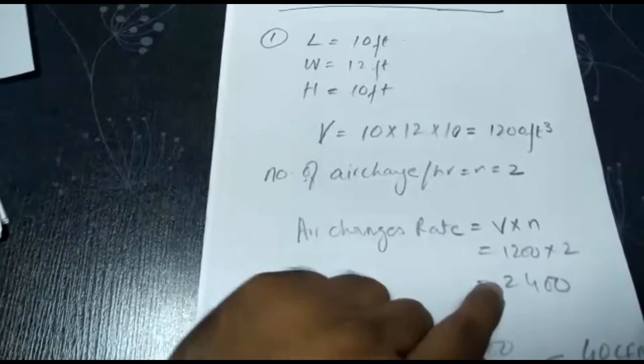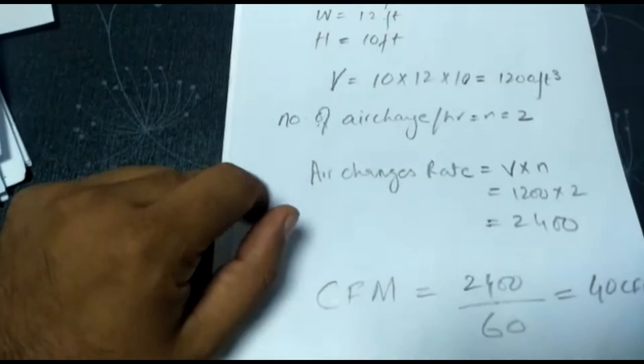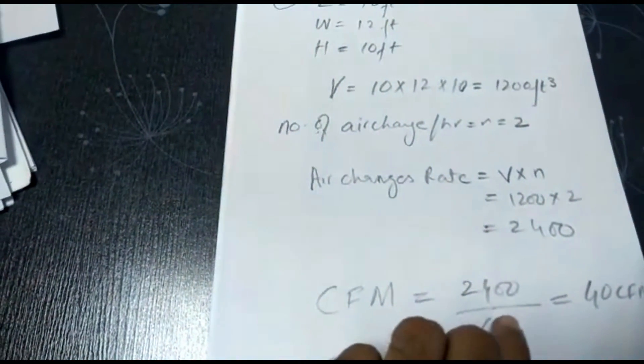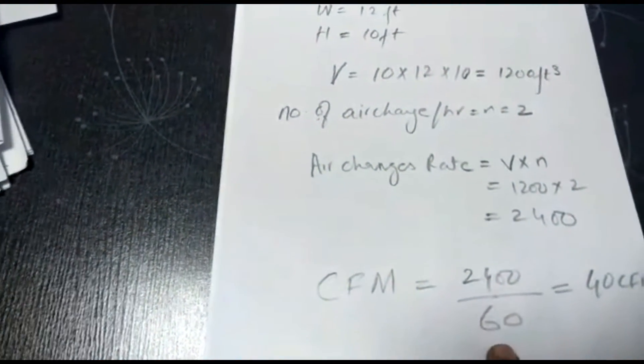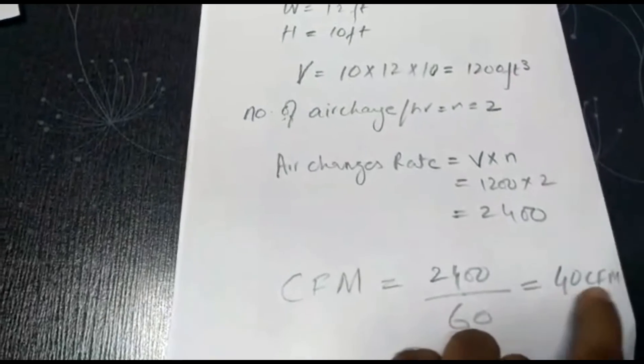For getting CFM, we will simply divide air changes rate by 60. So we get 40 CFM for this room.